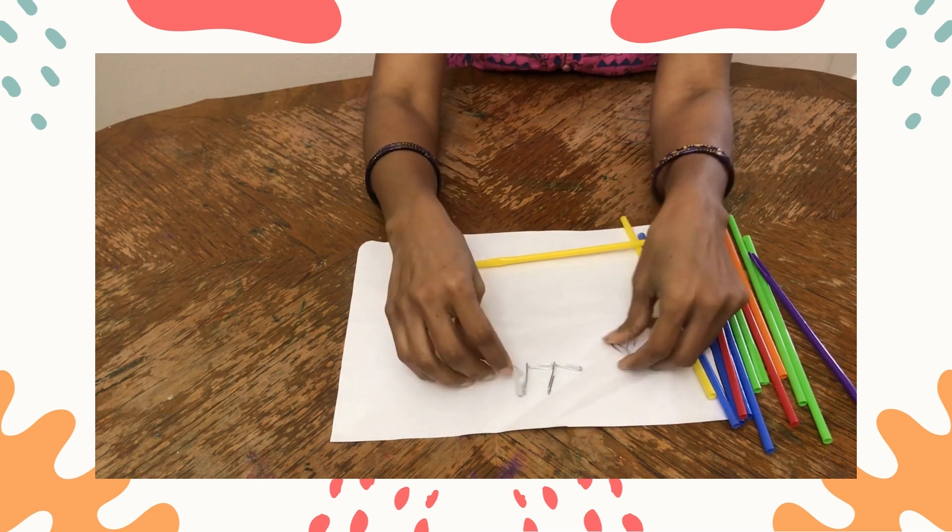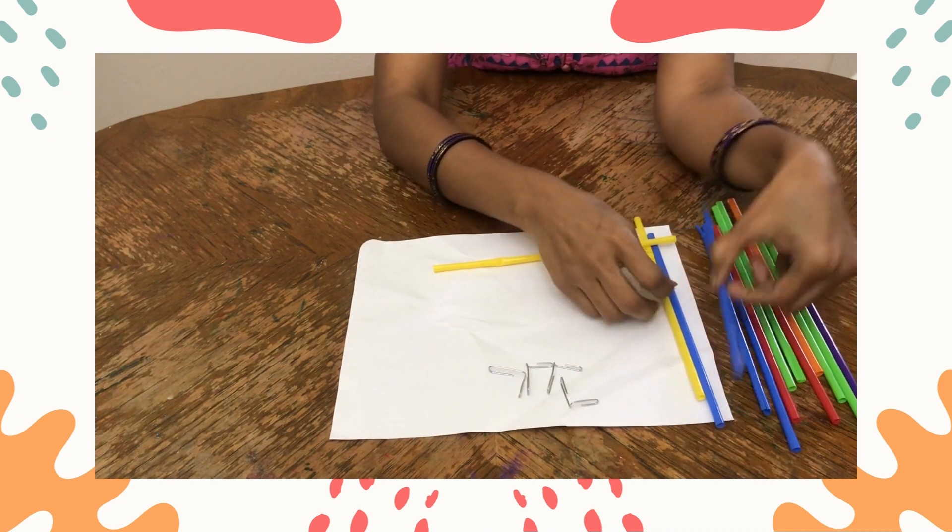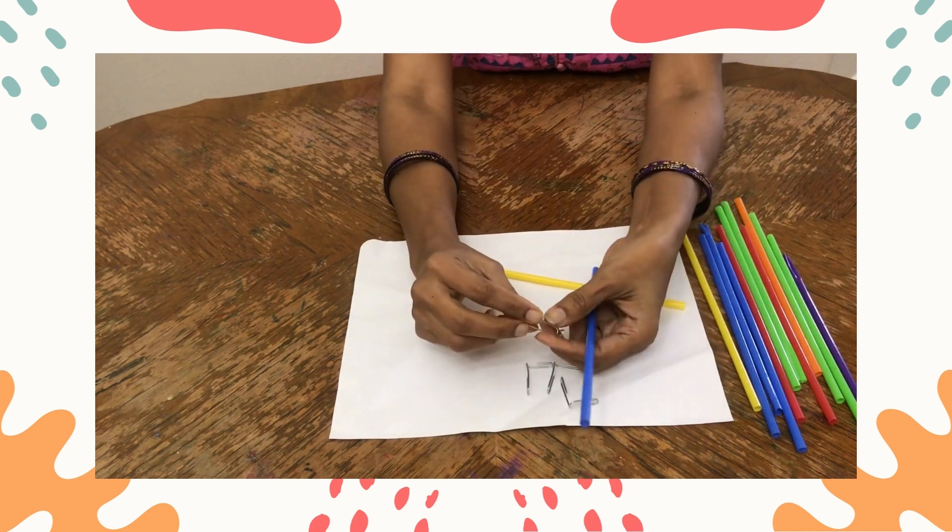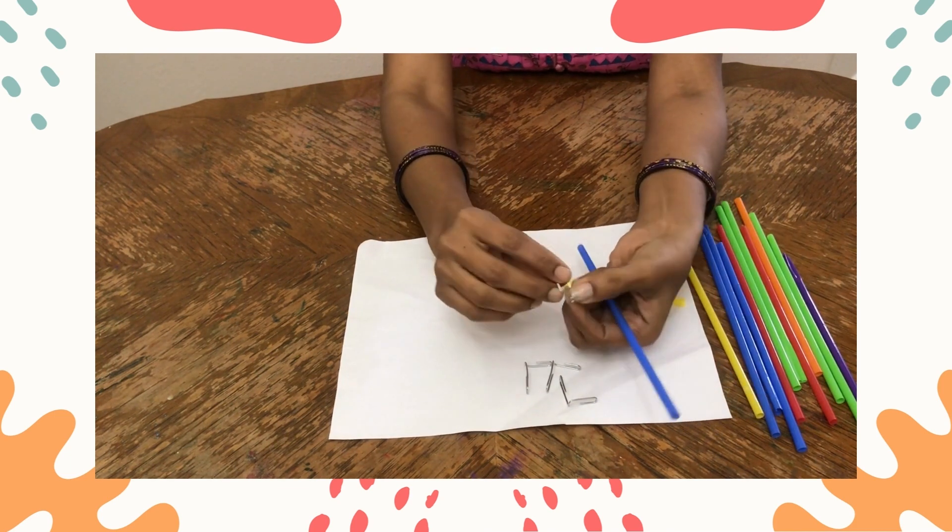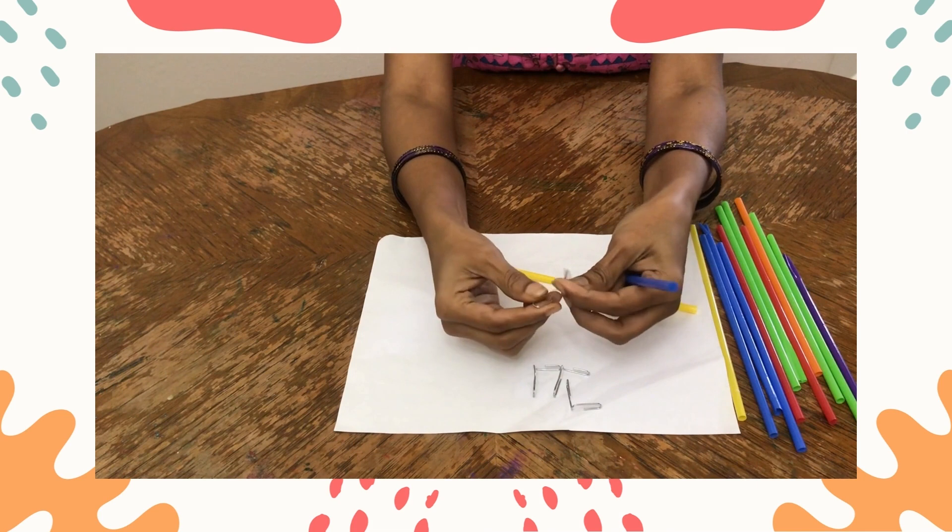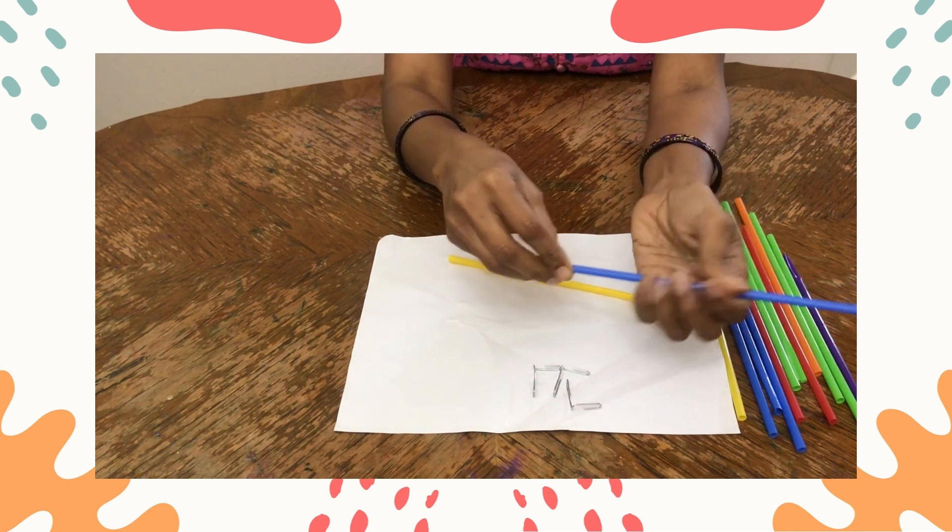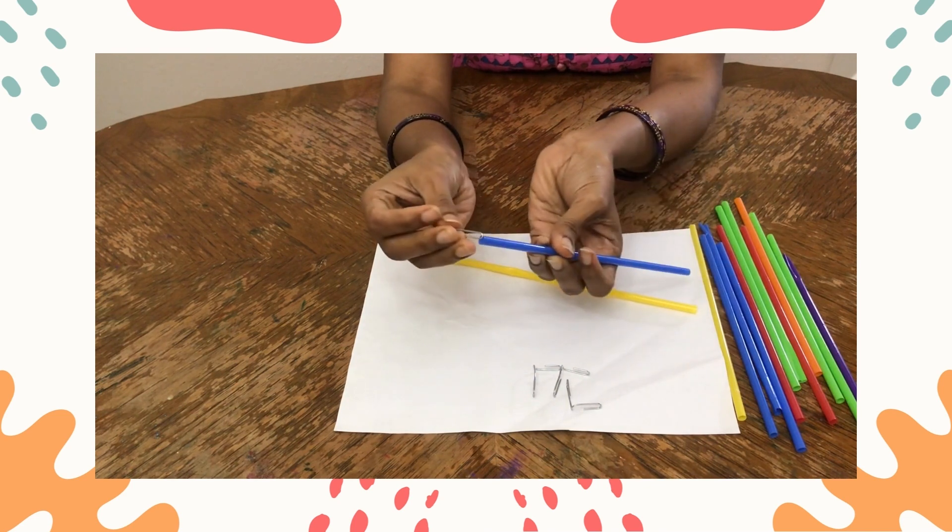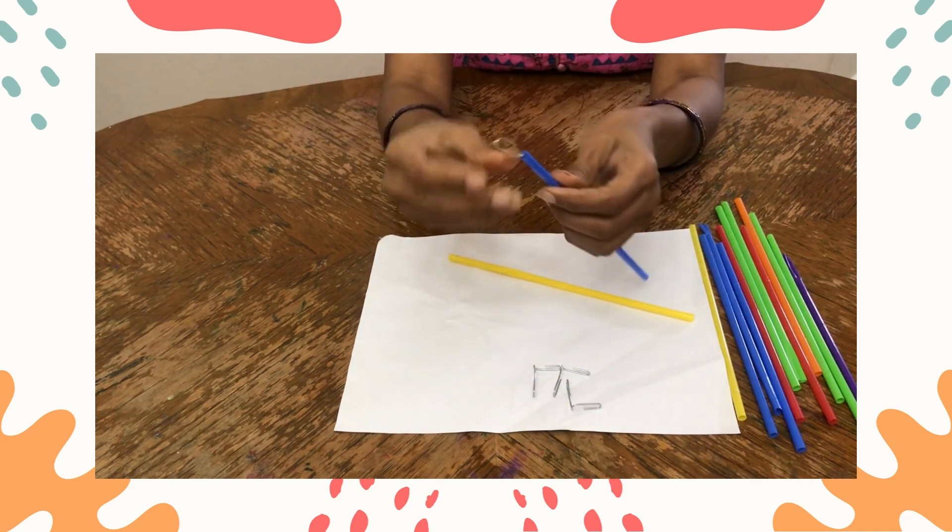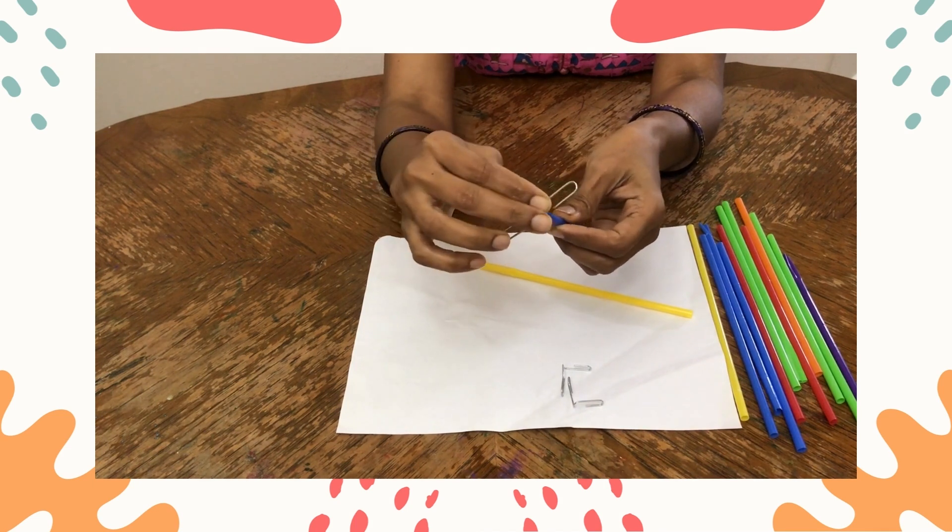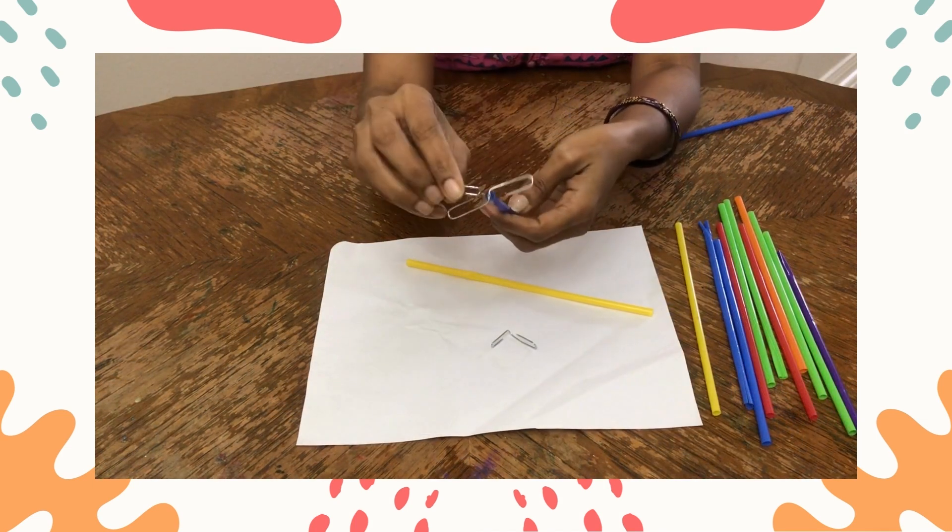So now you open all of those and take a straw. Now this paper clip has a small side and a large side. So now put all the small sides inside this straw. Like this.